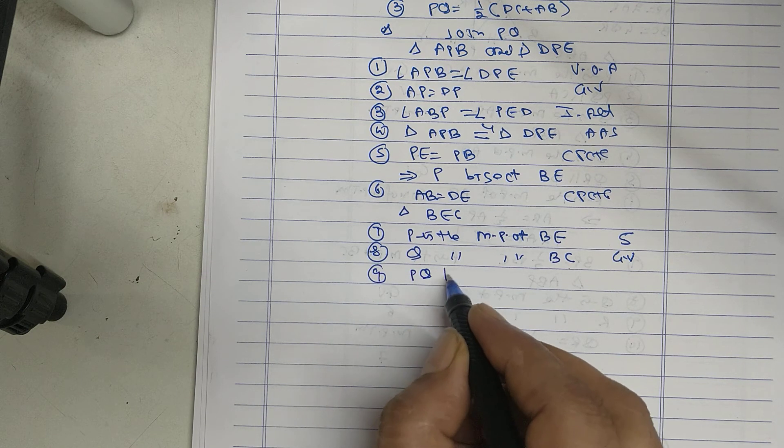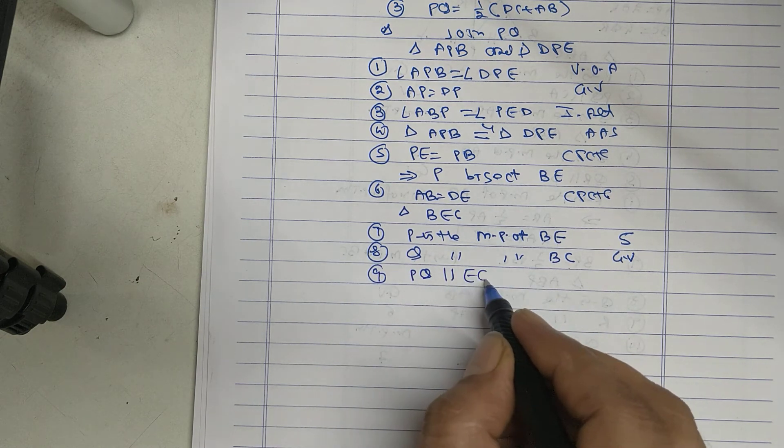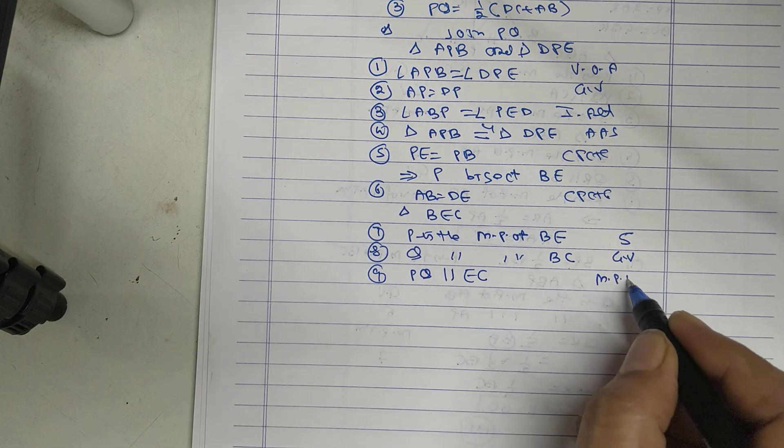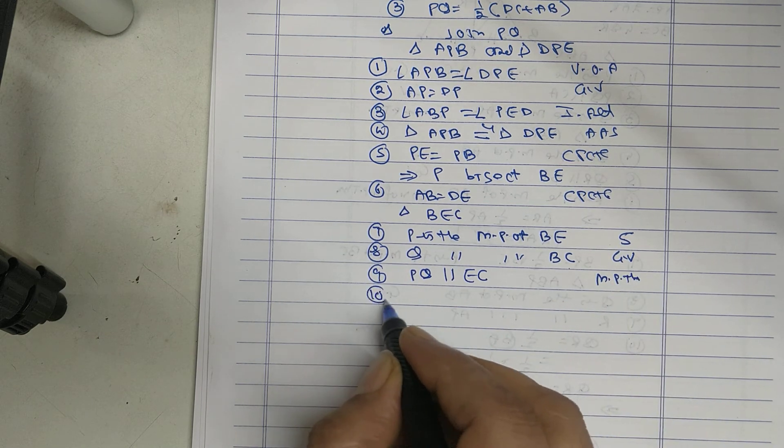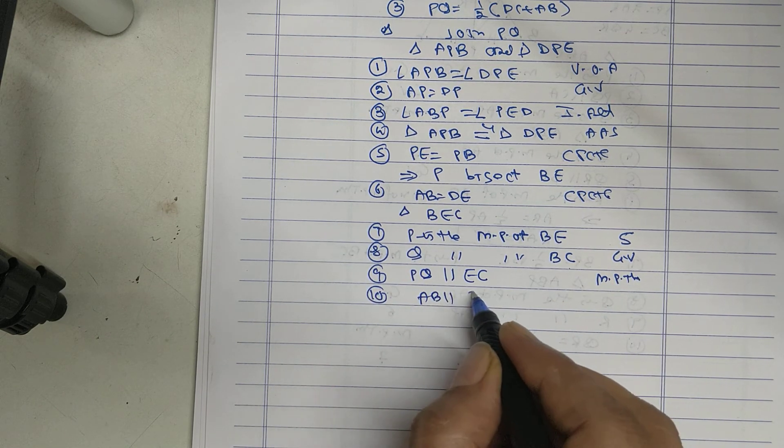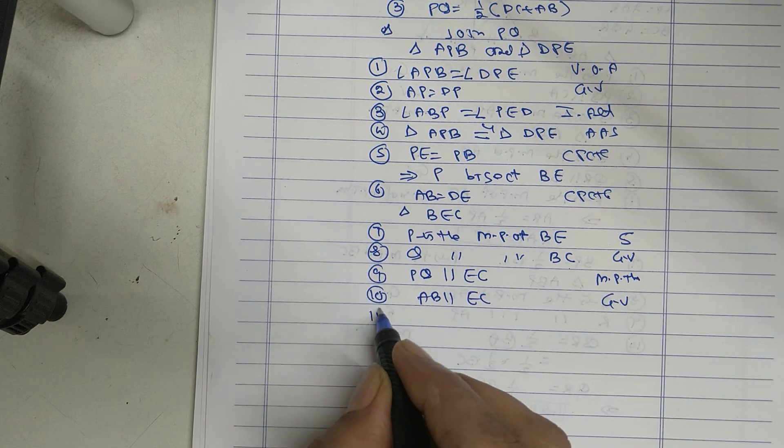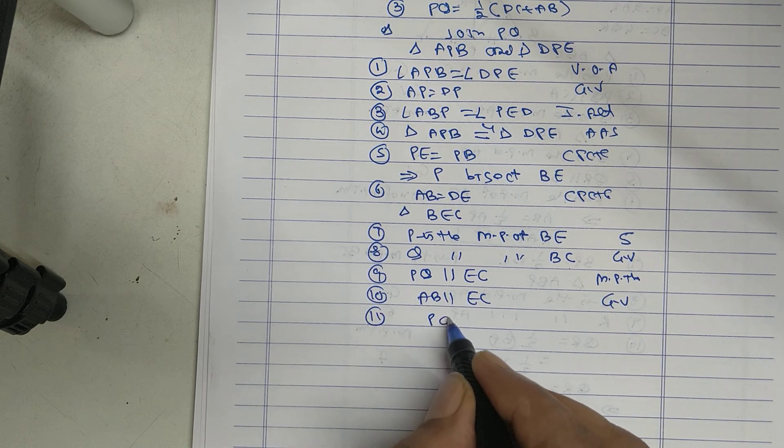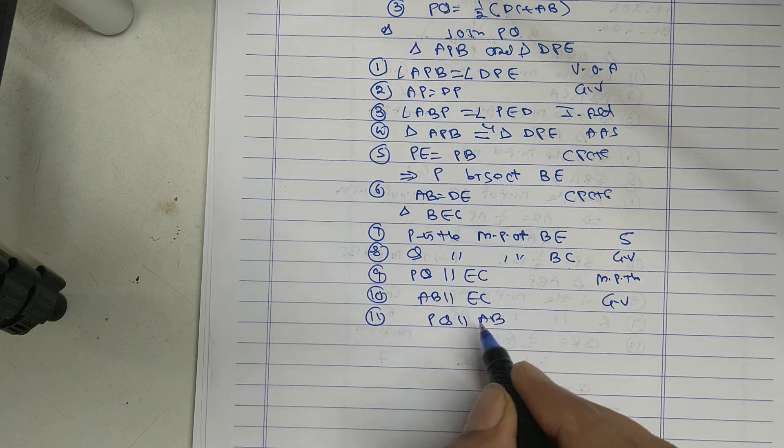Therefore PQ parallel to EC by midpoint theorem. But AB parallel to EC given, therefore PQ parallel to AB. Second part proved.